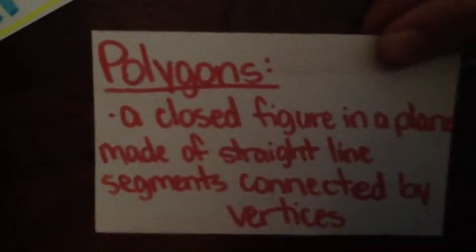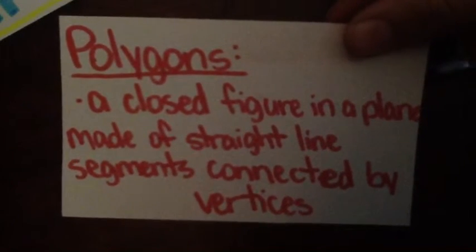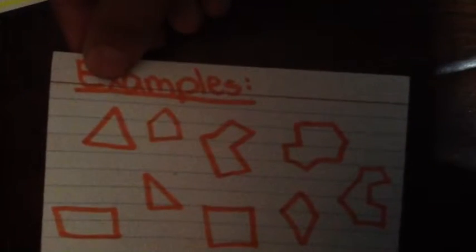Let's move on to polygons. A polygon is a closed figure in a plane made of straight line segments connected by vertices. Here are a few examples of polygons.